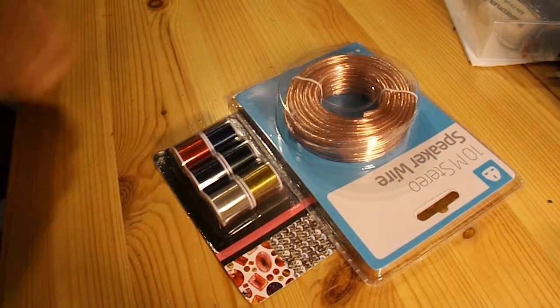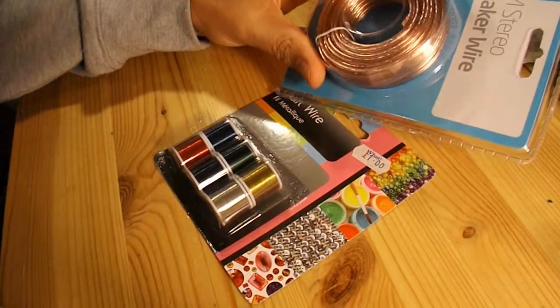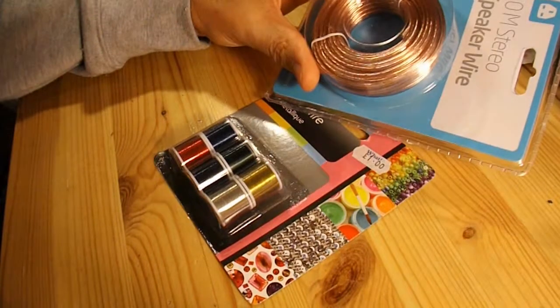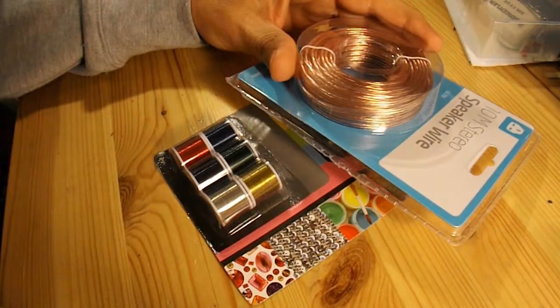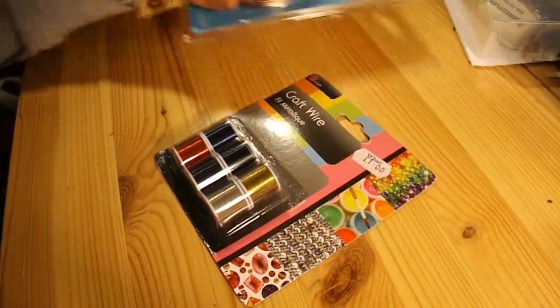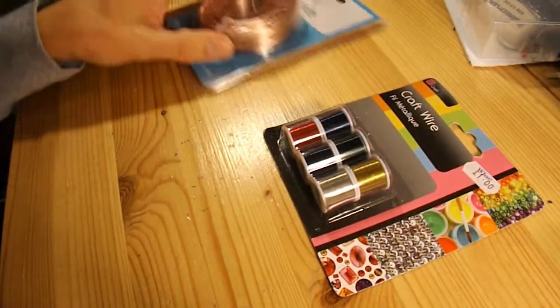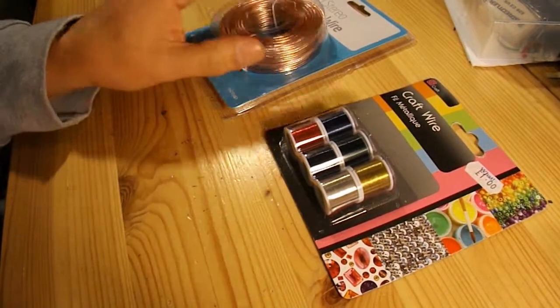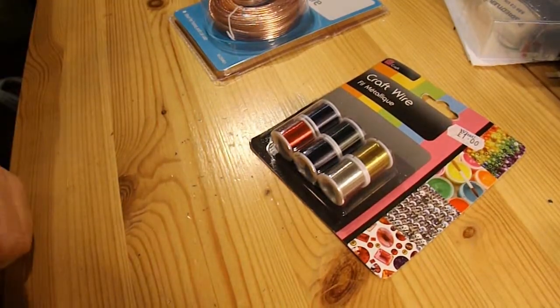What I fancy doing is making one of those bifilar pancake coils to do some sort of magnetic toy with. I've got two options: coiled speaker wire and craft wire. I'm not quite sure which one to do first. I quite fancy having a go with these just to see if it's actually insulated and whether I can do anything with it.